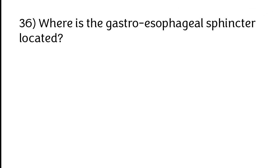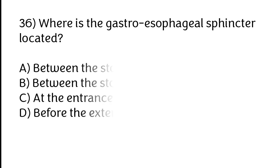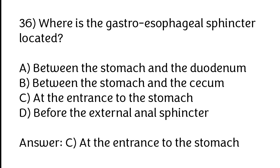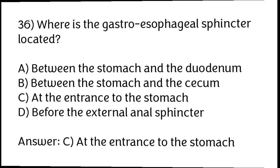Where is the gastroesophageal sphincter located? Options: A) Between the stomach and the duodenum, B) Between the stomach and the cecum, C) At the entrance to the stomach, D) Before the external anal sphincter. The correct answer is option C, at the entrance to the stomach.